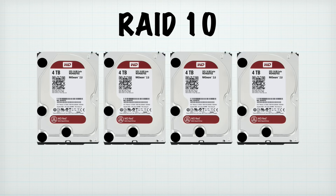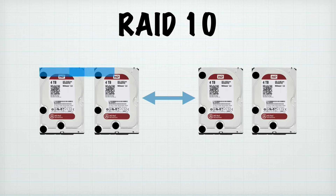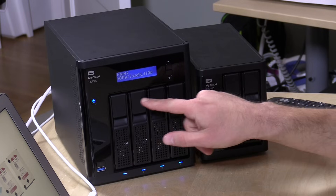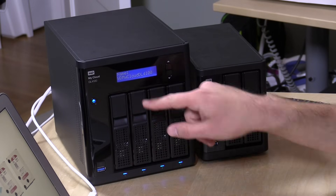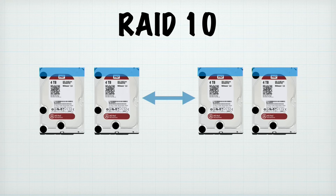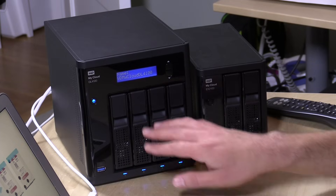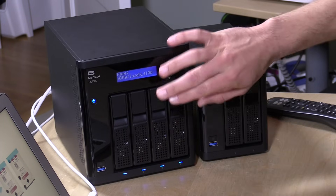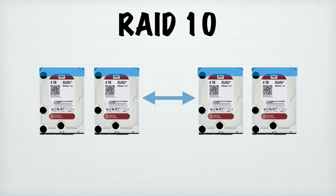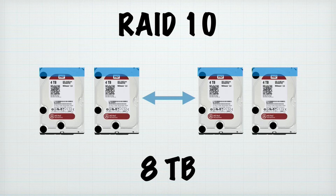RAID 10 is very similar to the other modes but adds additional protection layers. It takes your four drives and splits them into two groups, striping across two drives similarly to RAID 0, but also mirroring whatever is written to those two drives to the other two. So you have a very exact backup running all the time of one group of disks to the other. This gives you some performance advantages of RAID 0 with the protection of knowing everything is duplicated. However, that cuts your space down significantly — down to eight terabytes, because you're mirroring one set of drives to the other.